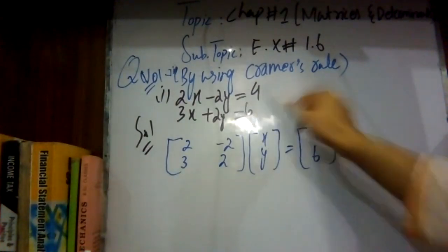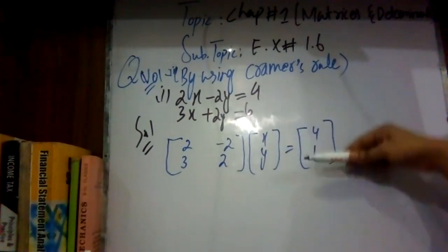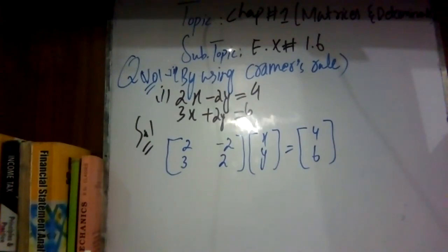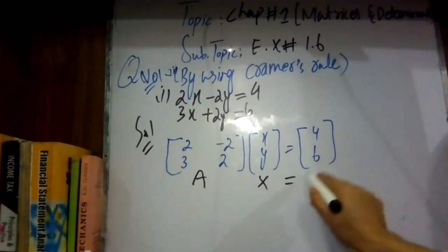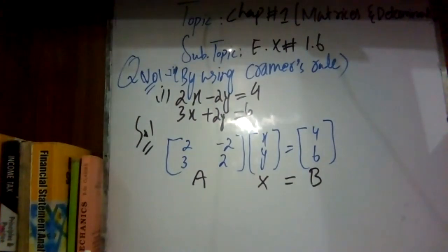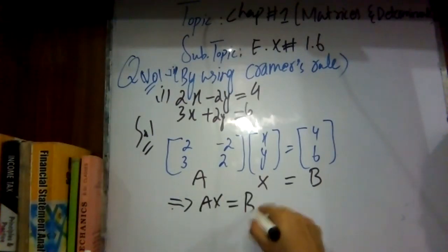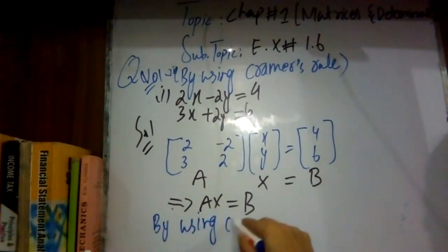You have equal terms — the constant terms — which are 4 and 6. We write these down in sequence. So this is the first matrix, which we call A. The unknowns are the variable matrix X. Then there is matrix B. In equation form, this implies AX equals B. But since we use Cramer's Rule, we write down the solution by using Cramer's Rule.